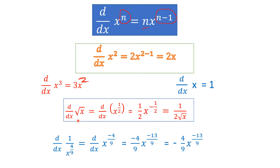The derivative of √x: we write it as x^(1/2) and apply the power rule. The power 1/2 comes to the beginning — (1/2)·x^(1/2 − 1) = (1/2)·x^(−1/2). To make the power positive, take it to the denominator: the answer is 1/(2√x).